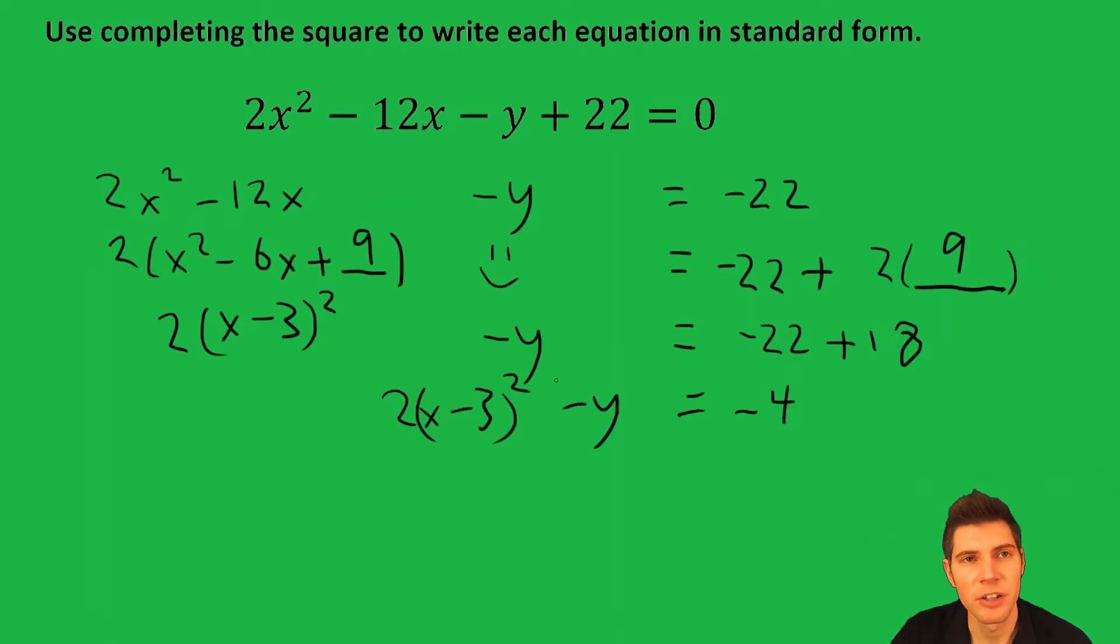Since there's no squared value, what we want to do is get the y by itself. So we're going to add y to both sides and get this 4 over to the other side as well. So these y's cancel, we're left with 2(x - 3)² + 4, we still have the +4, equals—these cancel—and we're left with just y.